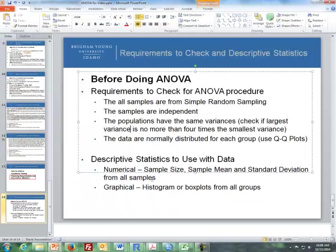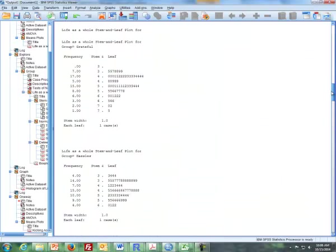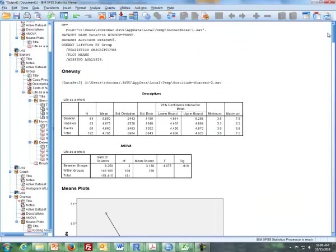The last two items are descriptive statistics. Typically, when we look at descriptive statistics for ANOVA, we want to look at the sample size, sample mean, and standard deviation from all the groups, and then we can also look at histograms or box plots from all the groups. Going back to SPSS, and like I said, you can find this similarly in Excel, we can look at the sample size, the mean, and standard deviation of all three groups.